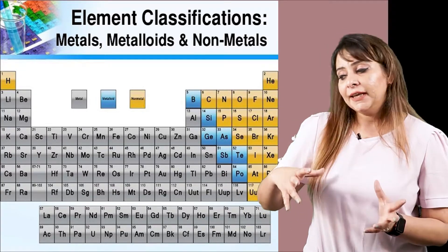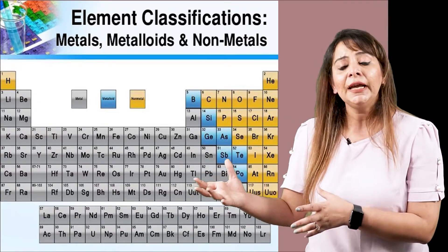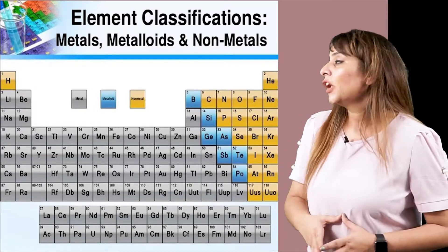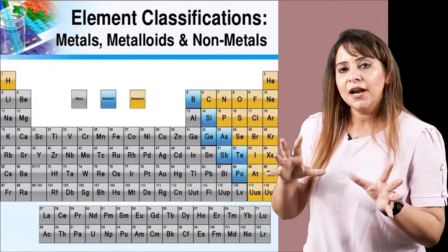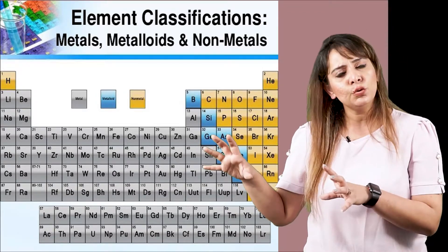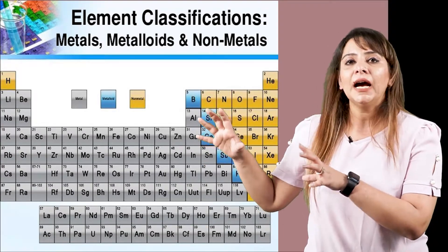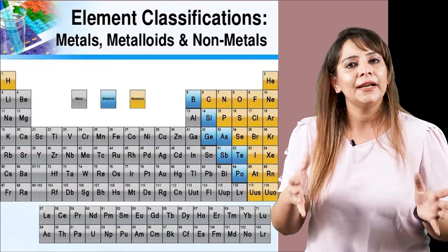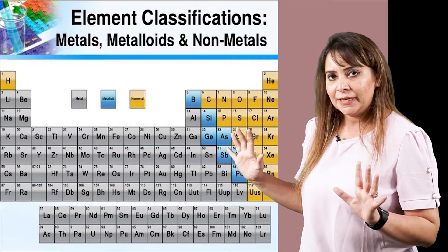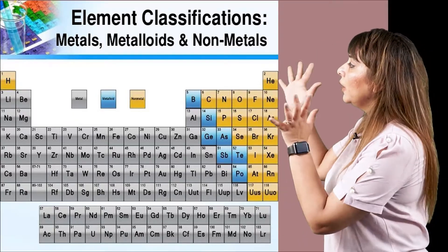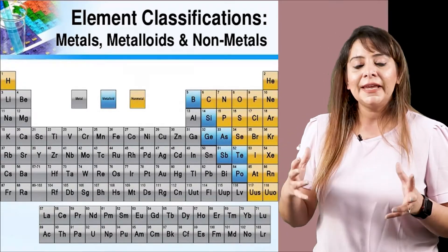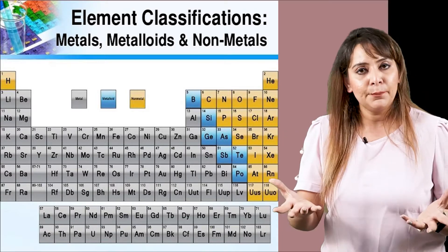Out of the 118 elements, the maximum are naturally occurring and a few are synthetically made by nuclear reactions. Almost 92–94 elements are naturally occurring, and the rest are synthetically made in the lab. In the periodic table, the elements are arranged according to their nature — meaning what properties they actually possess.